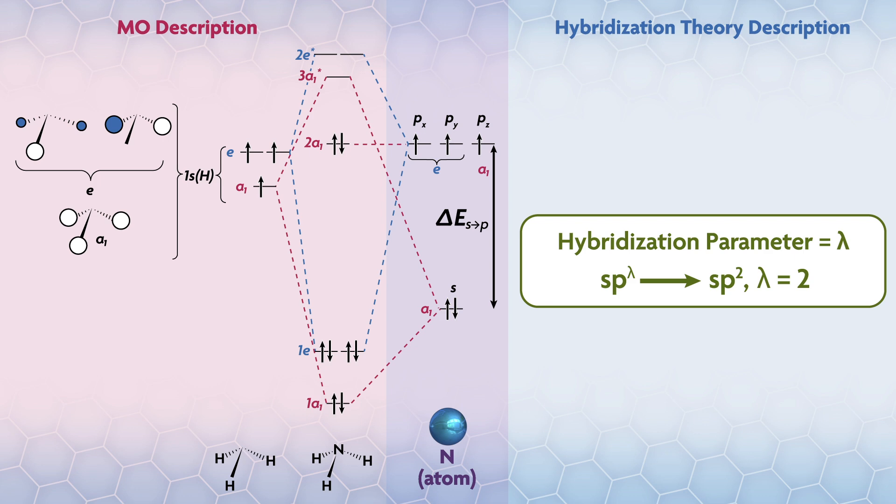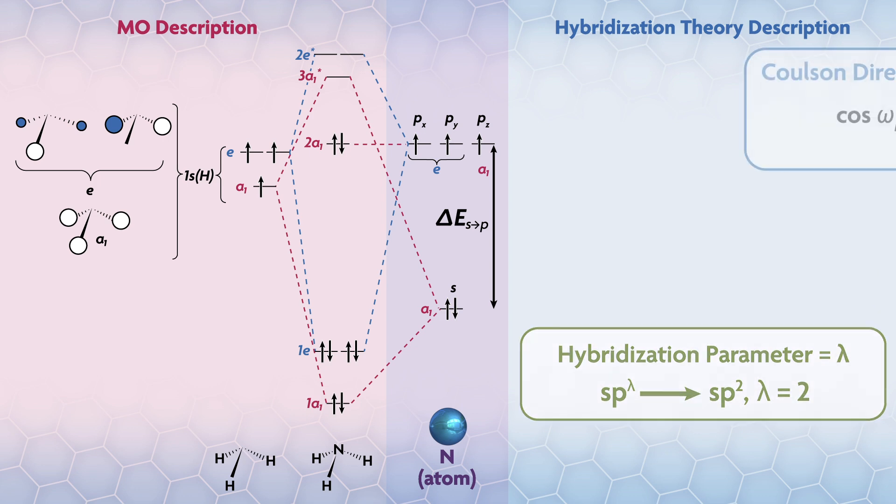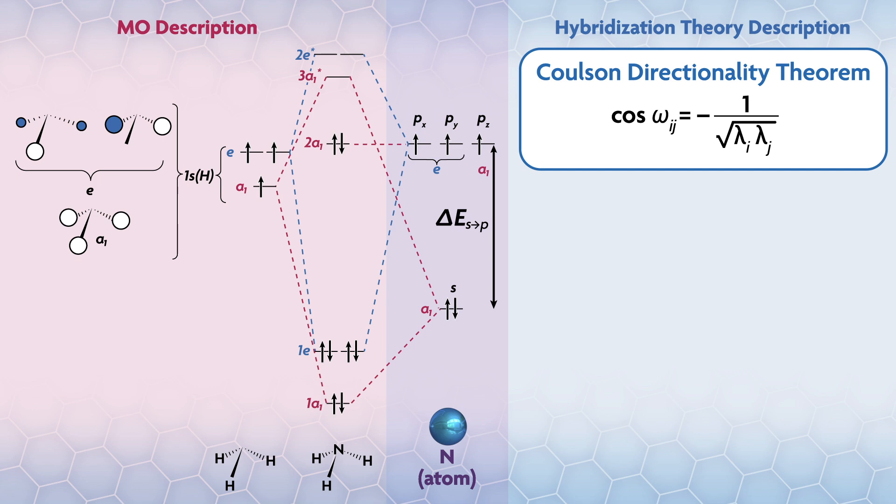First, we have the Coulson directionality theorem. If the hybrids are orthogonal, this equation has to be satisfied. Here is the general form of the equation, where ωij is the angle between the hybrids, and λi and λj are the hybridization parameters for the two different hybrids. If the two hybrids happen to be the same, then it simplifies to this useful equation.